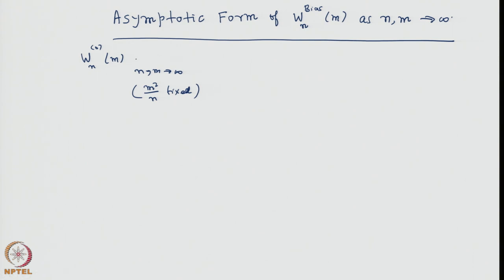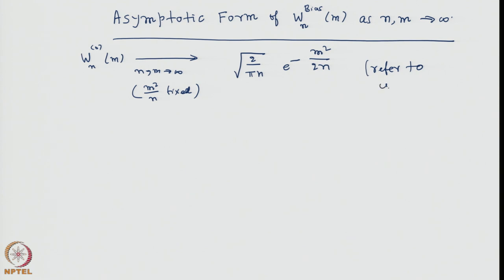Under this assumption, the asymptotic form was square root of 2 by pi n, times e to the power minus m squared by 2n, referring to the symmetric case or unbiased random walk.